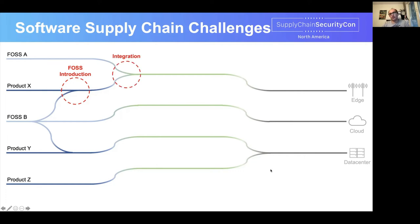The next challenge, again due to disaggregation, is that many different components are developed and published by various open source communities. When these components are consumed from upstream communities and put together with products that communication service providers acquire from vendors, they face integration challenges. With integration, it is very important to keep traceability and reproducibility in mind, so that when components are integrated, the critical information about those components is not lost in translation.